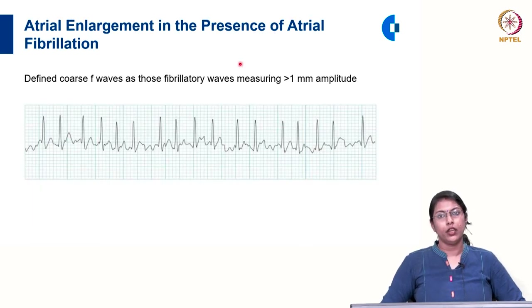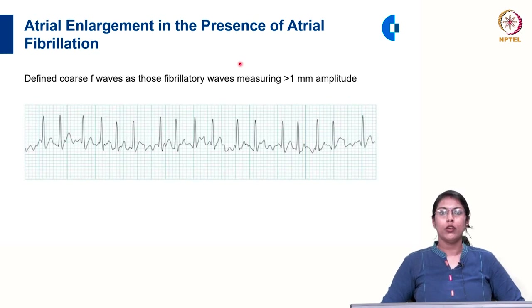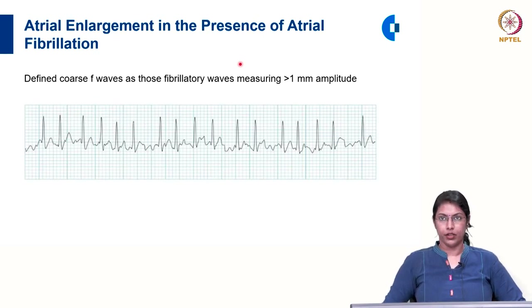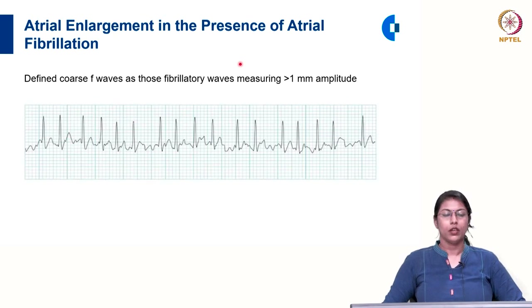How do you identify atrial enlargement in the presence of atrial fibrillation? In atrial fibrillation you will not see a P wave; instead you will see fibrillatory waves appearing as baseline disturbances. If there are coarse fibrillatory waves — that is, fibrillatory waves with amplitude more than 1 millimetre — it is suggestive of atrial enlargement even in the presence of atrial fibrillation.